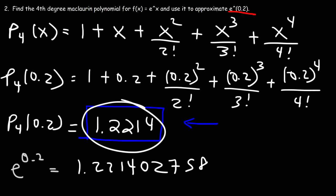If you want to increase the accuracy of your approximation, increase the value of n. For instance, the fifth degree polynomial will give you a better approximation than the fourth degree polynomial.